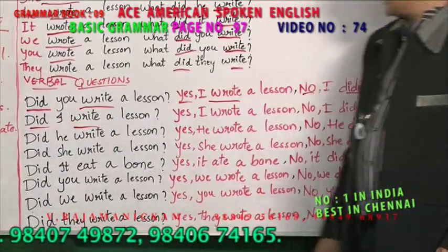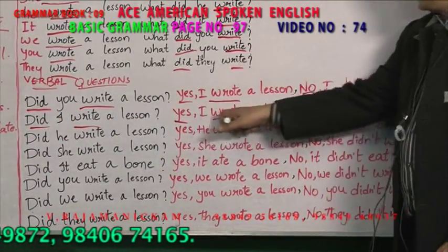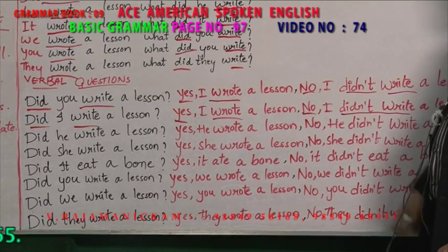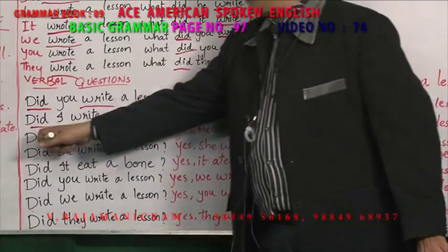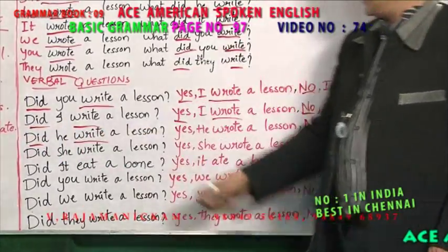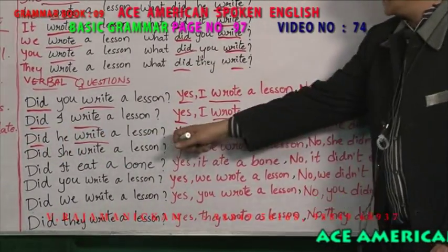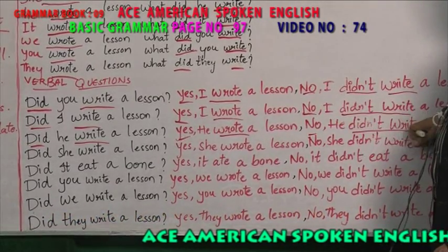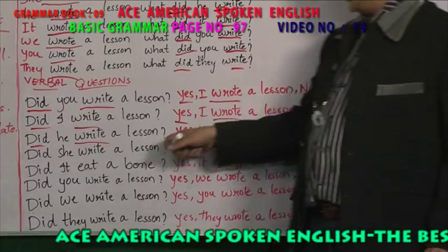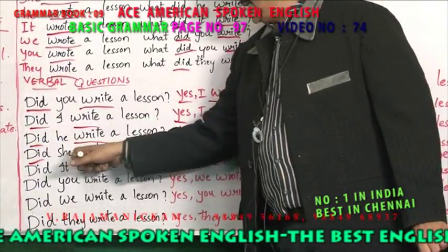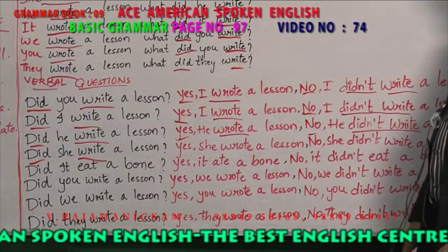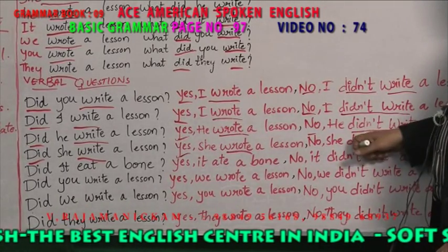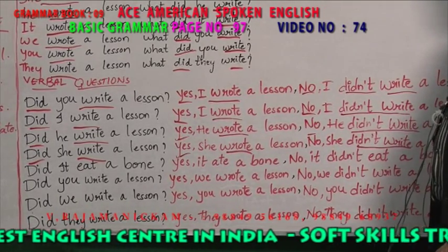Yes or no question: did you write a lesson? Answer: yes, I wrote a lesson. Negative: no, I didn't write a lesson. Did I write a lesson? — past tense. Yes, I wrote a lesson. No, I did not write a lesson. Did he write a lesson? Yes, he wrote a lesson. No, he did not write a lesson.